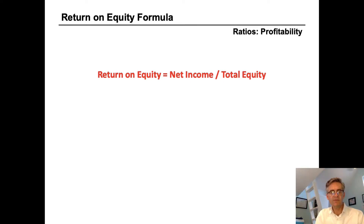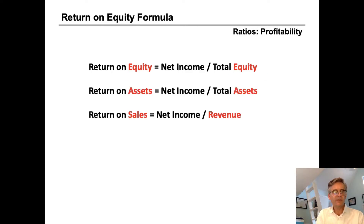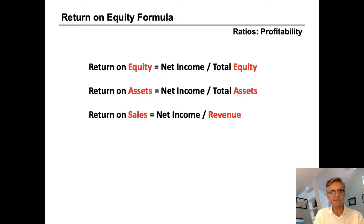We're going to talk about return on equity. To calculate return on equity, it's net income divided by total equity. Oftentimes, you will see return on equity abbreviated as ROE. Return on equity is similar to return on assets or return on sales, and what changes in terms of return on equity is the denominator — we divide net income by equity, versus assets or revenue for return on assets and return on sales respectively.